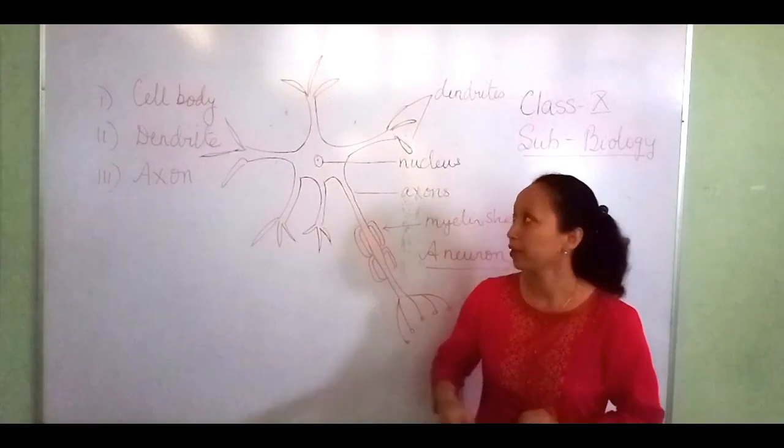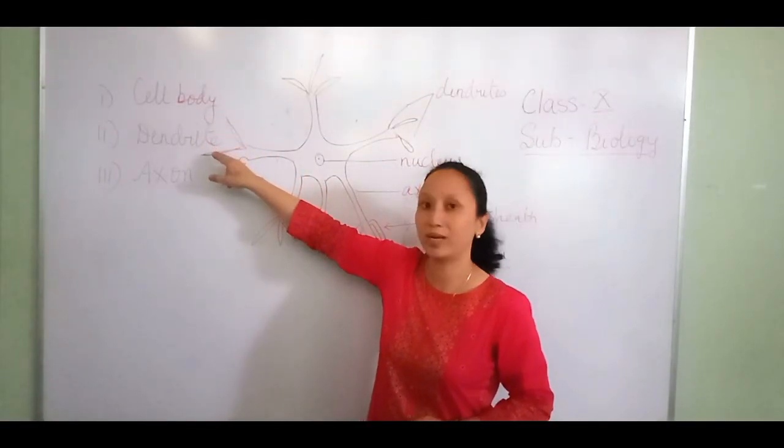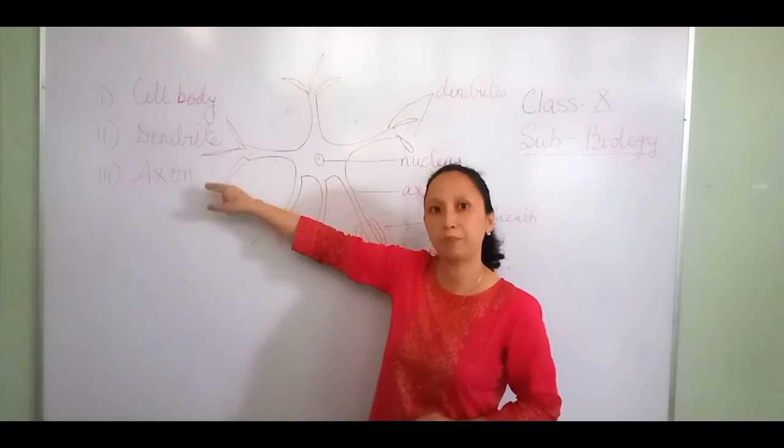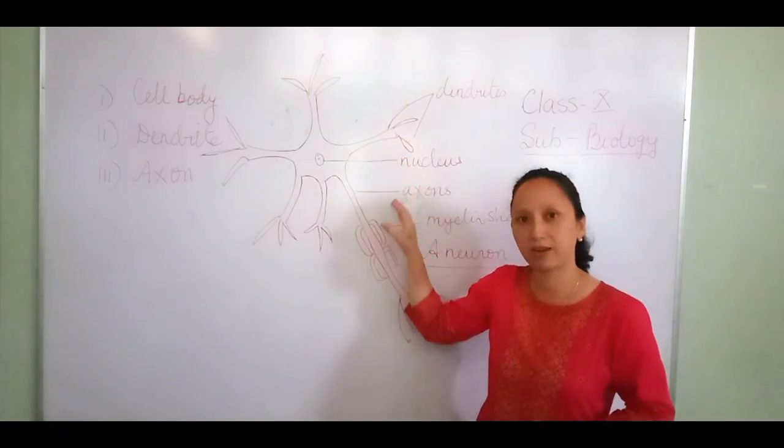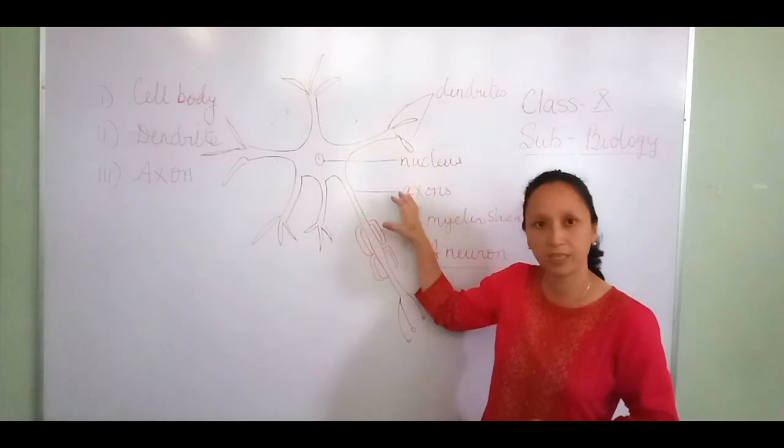What are these parts? The first part is called the cell body, the second part is the dendrite, and the third part is called the axon. Here I have put a diagram of a nerve cell or neuron. It's a very simple sketch.